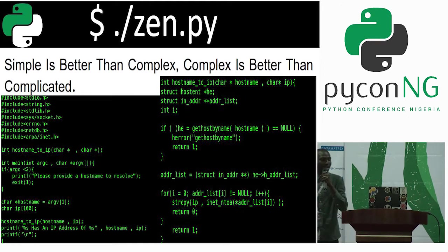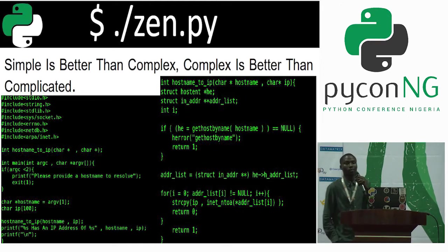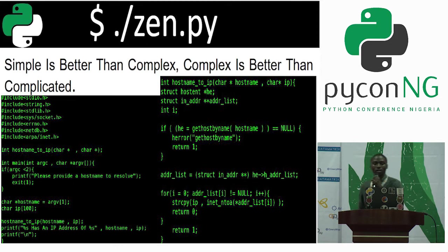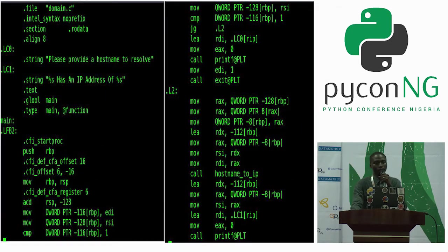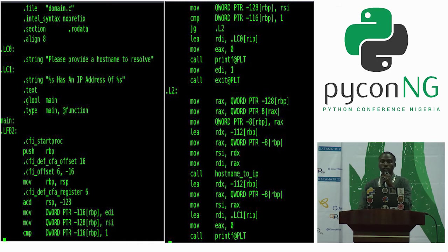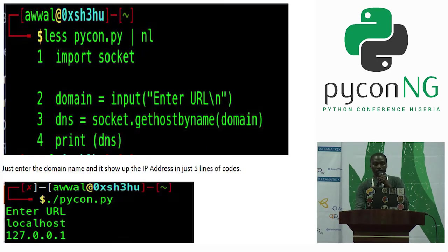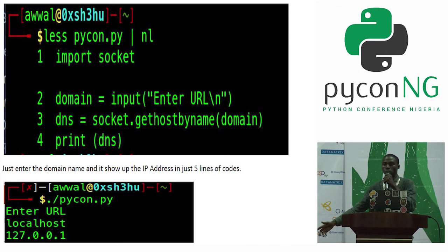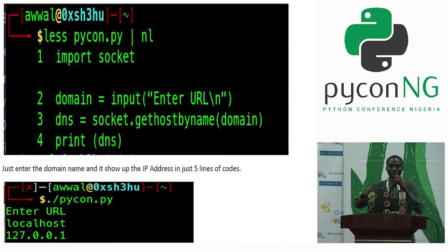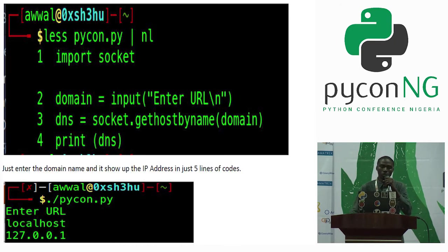Simple is better than complex, complex is better than complicated — when you import this, right? Here I try to write a simple script in C which is going to get your host — like you type google.com and you're going to get the IP address of google.com or any website.